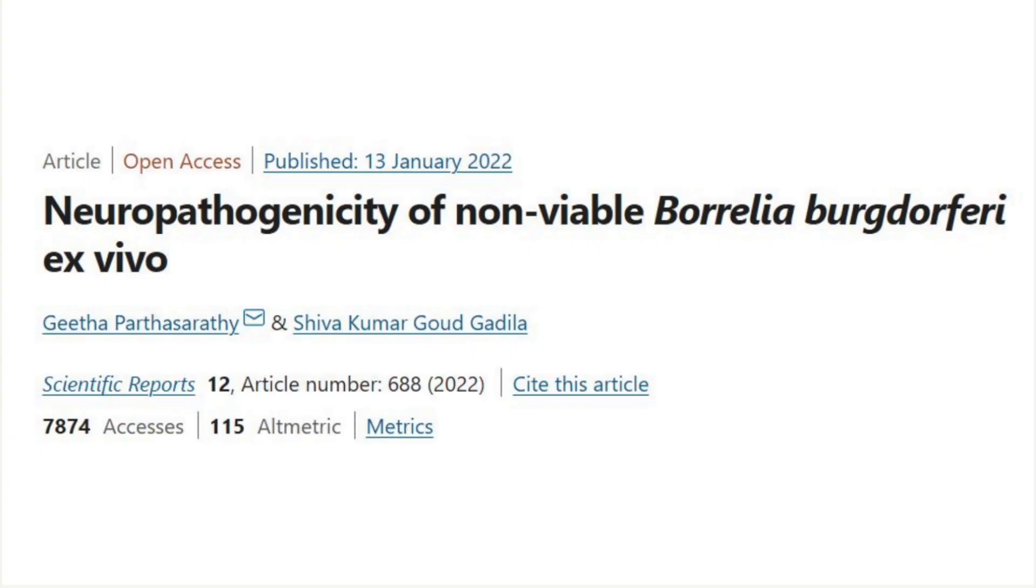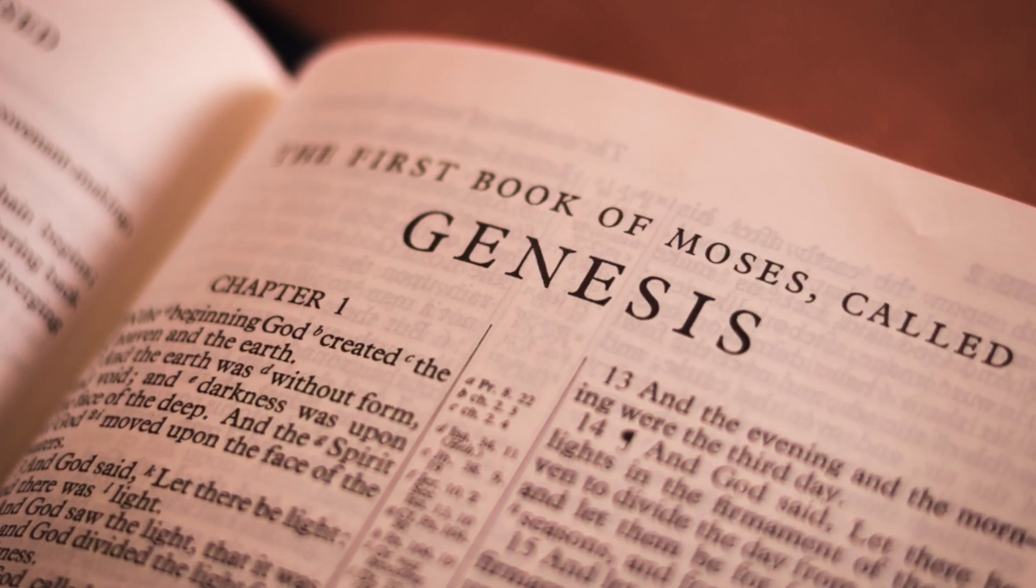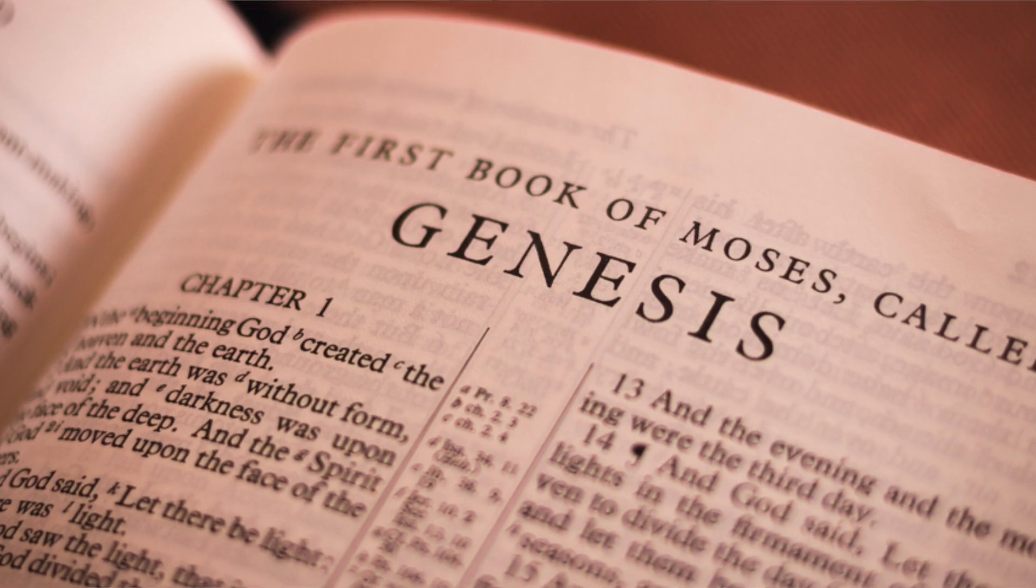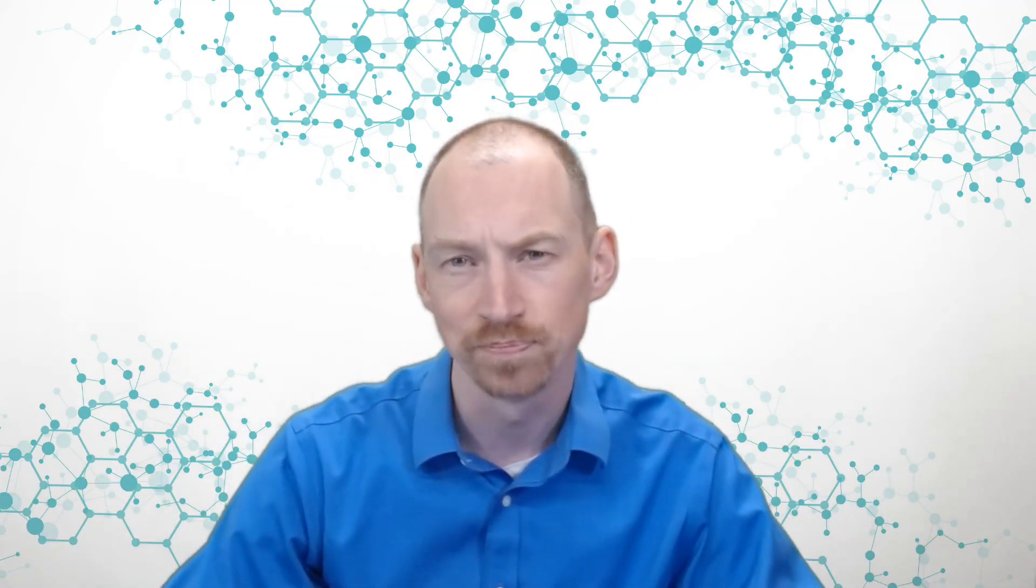This is the study we're going to pull out. This is a January 2022 study. Very recent. And it says neuropathogenicity of non-viable Borrelia burgdorferi. So a couple of key phrases. Neuropathogenicity. Where is the pathology in the nerves? Where is the nerve problem? Genesis means coming from, right? So if you look at the book of Genesis, Genesis means beginning. It means origin. So where are the nerve symptoms coming from?